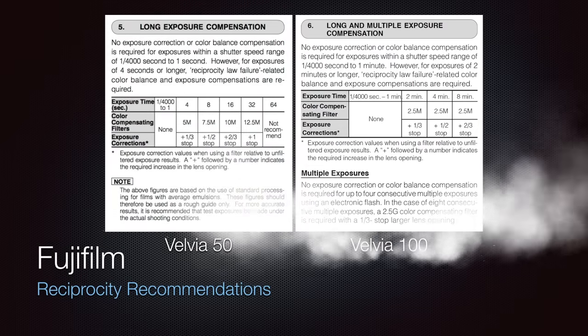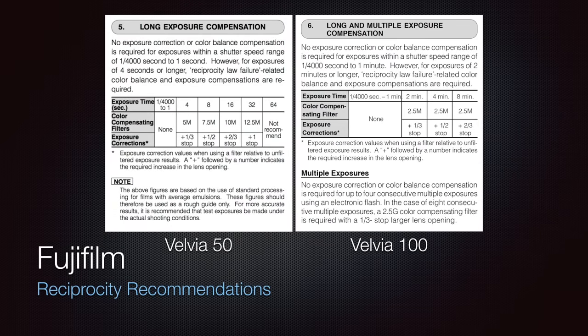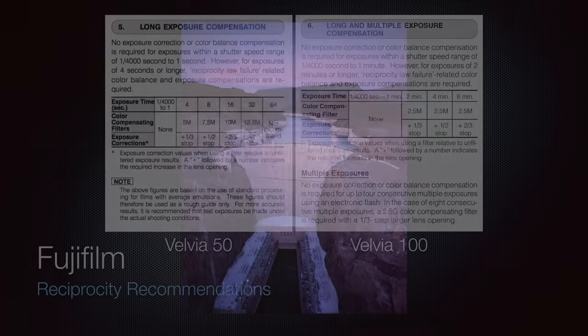If you are using Velvia 100, Fujifilm does not recommend reciprocity correction for exposures up to one minute in length. However, exposures greater than one minute may require increased exposure and color compensating filters, and beyond eight minutes, Fujifilm does not list any corrections. In my experience, Velvia 100 tends to slightly overexpose at its ISO rating of 100, so I typically don't consider reciprocity failure outside of Fujifilm's recommendations. There have been several occasions where I've treated Velvia 100 like Velvia 50 and ended up with overexposed, unusable images. Just remember that the film is progressively slowing down as time goes on, and time is actually on your side when it comes to Velvia 50, but not necessarily with Velvia 100.